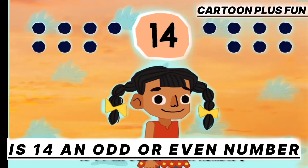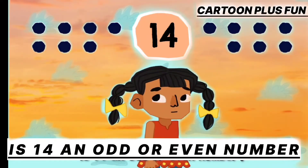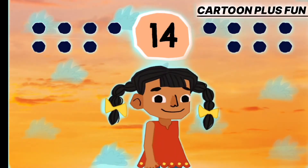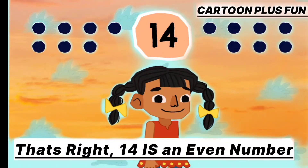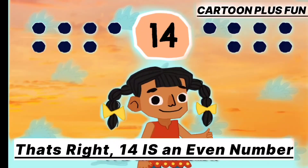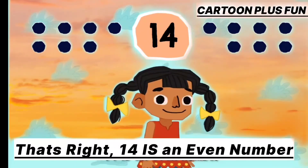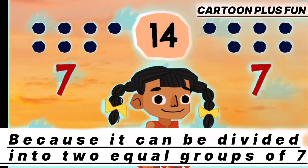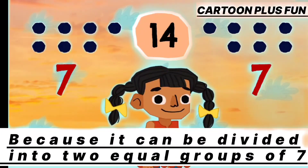Is 14 an odd or even number? That's right! 14 is an even number because it can be divided into 2 equal groups of 7.